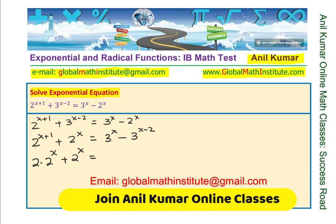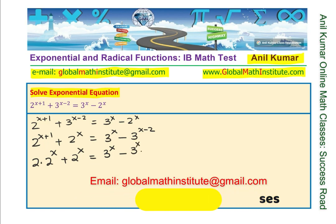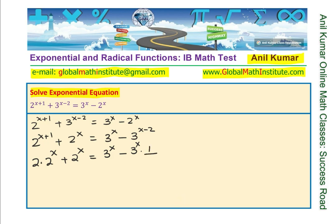And here when I say 3^x - 3^(x-2), it means 3^x times 3^(-2) means 1 over 3 square. So that's what it means.